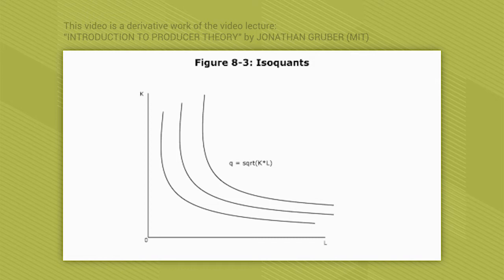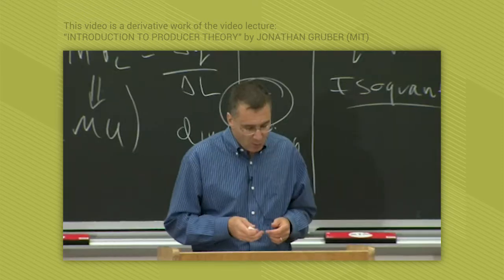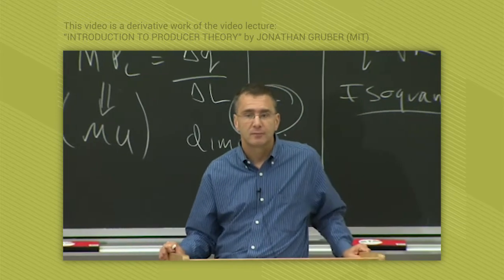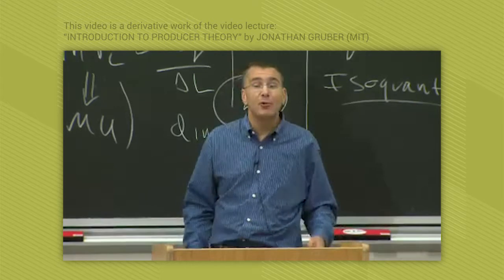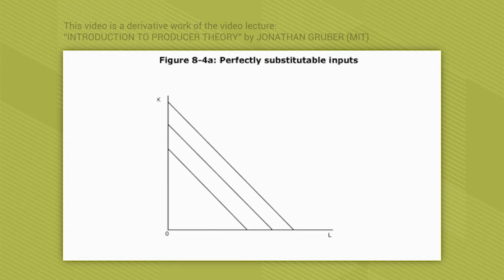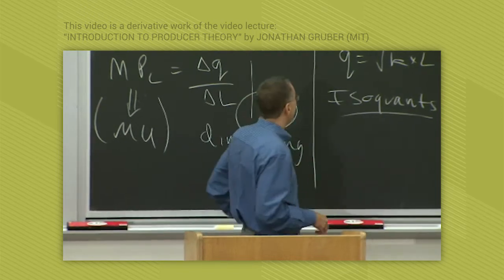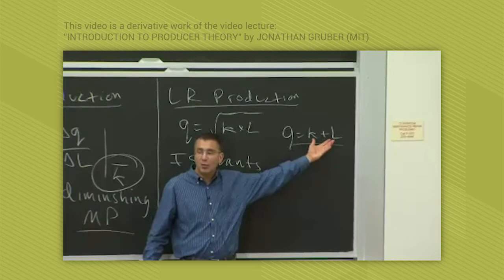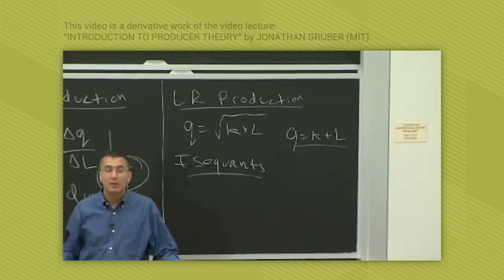Isoquants slope downward because there's a trade-off between capital and labor. The substitutability between labor and capital determines the slope of the isoquants. If inputs are perfectly substitutable — meaning you don't care whether you have three capital and one labor or three labor and one capital, only the total matters — you'd have a linear isoquant. That would correspond to a production function like Q = K + L.